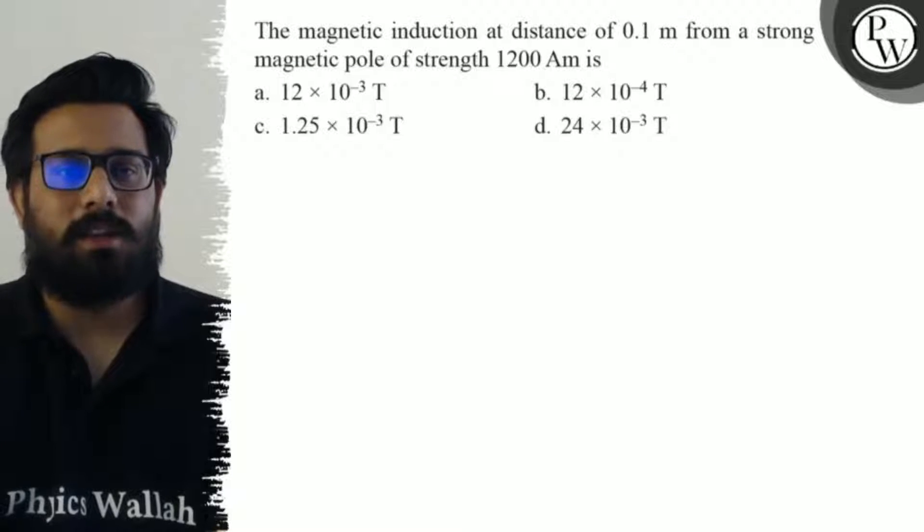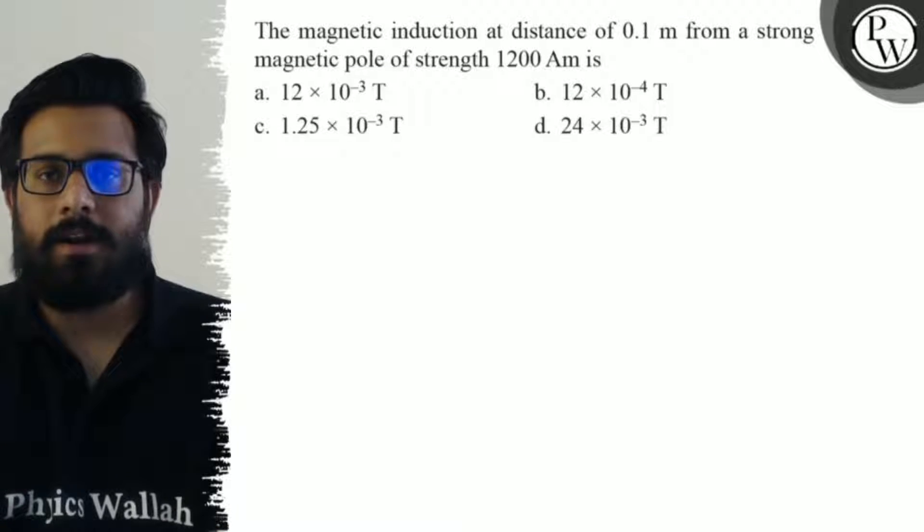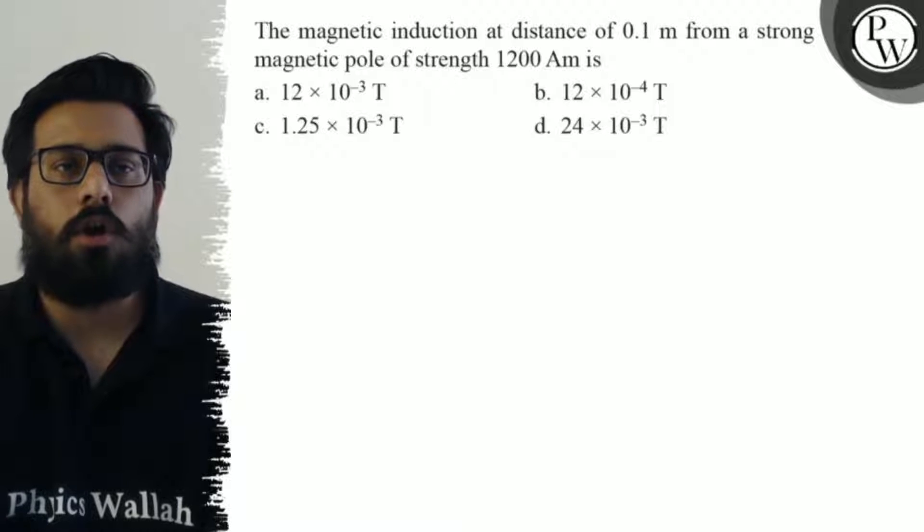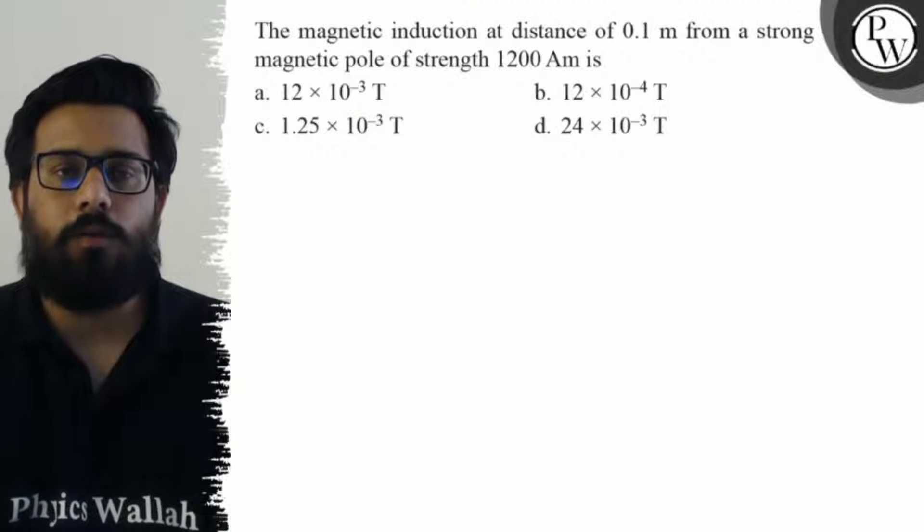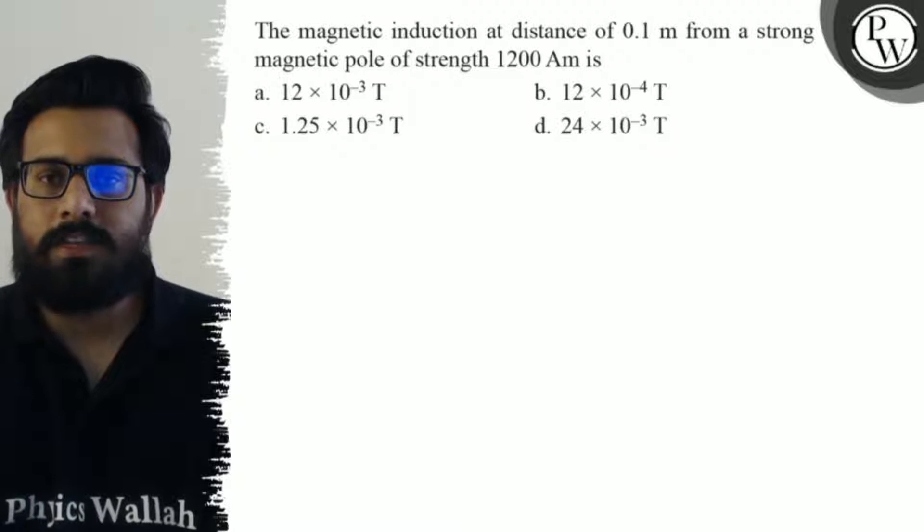Hello, let's see the question. The magnetic induction at a distance of 0.1 meter from a strong magnetic pole of strength 1200 ampere meter is: first option is 12 × 10⁻³ Tesla, second option is 12 × 10⁻⁴ Tesla, third option is 1.25 × 10⁻³ Tesla, and fourth option is 24 × 10⁻³ Tesla.